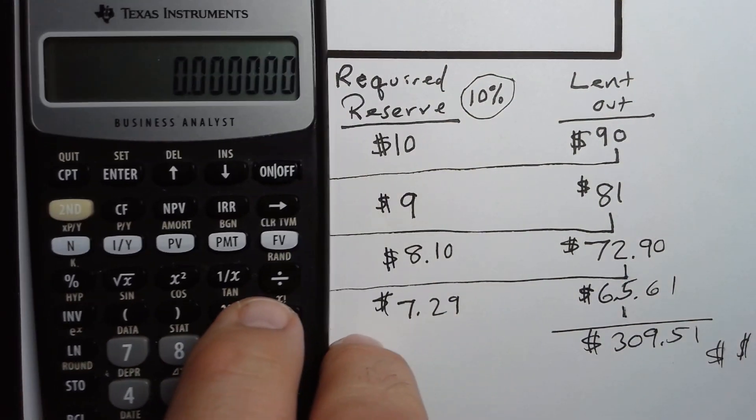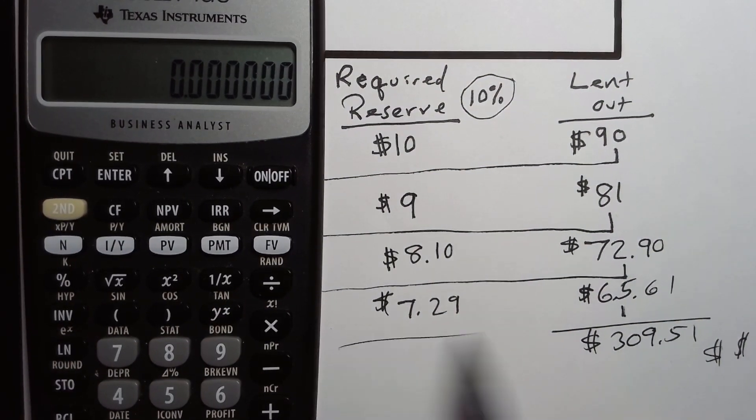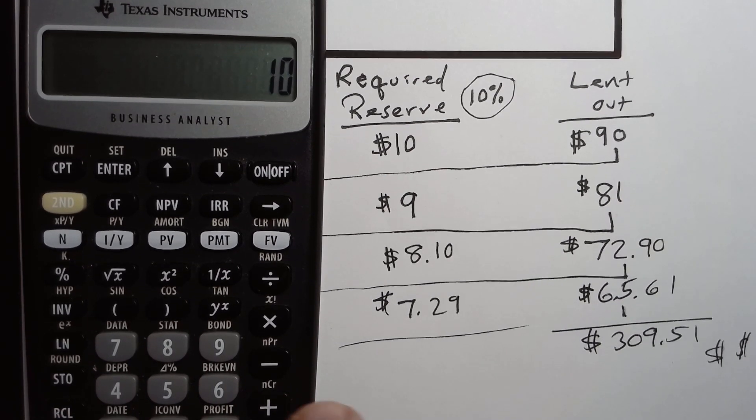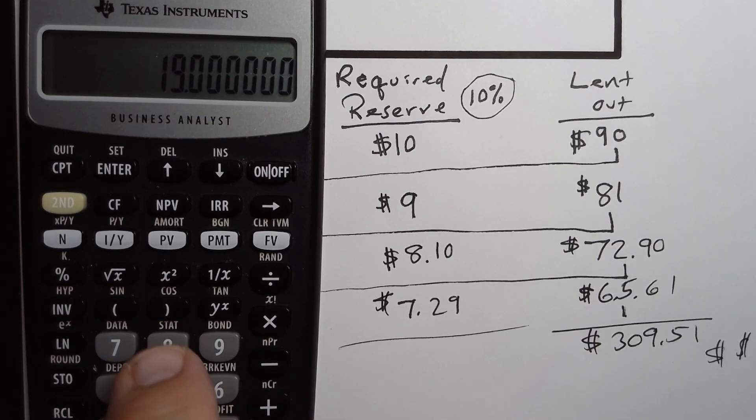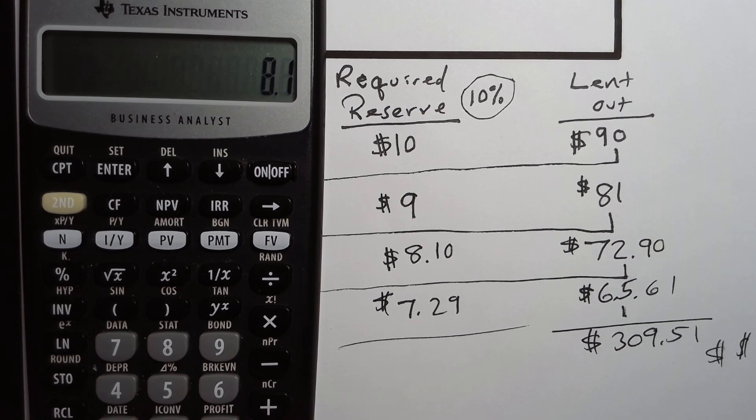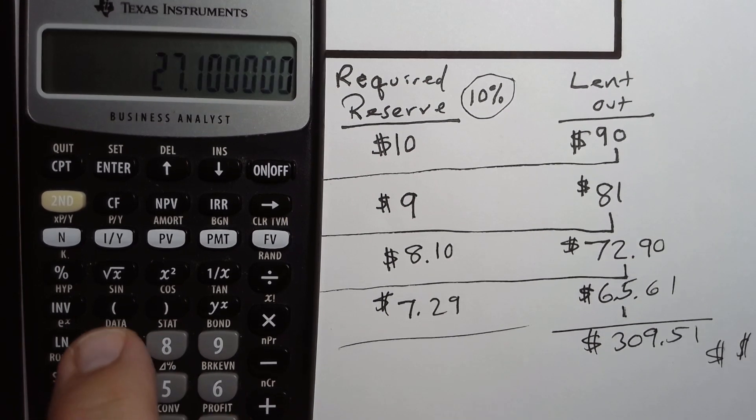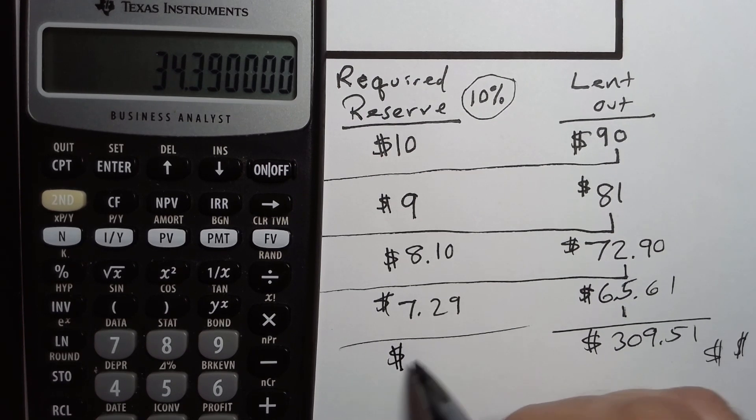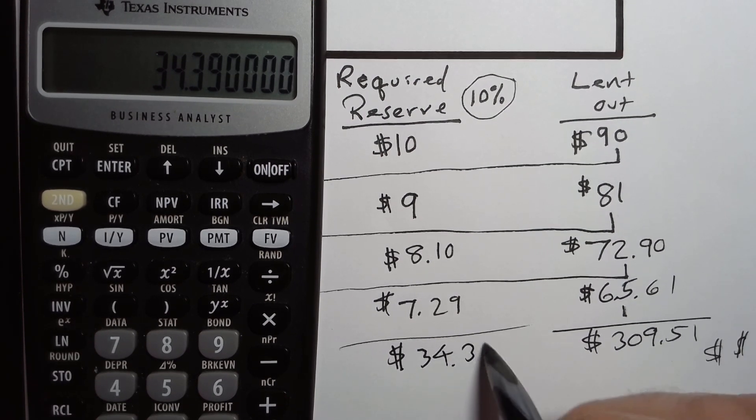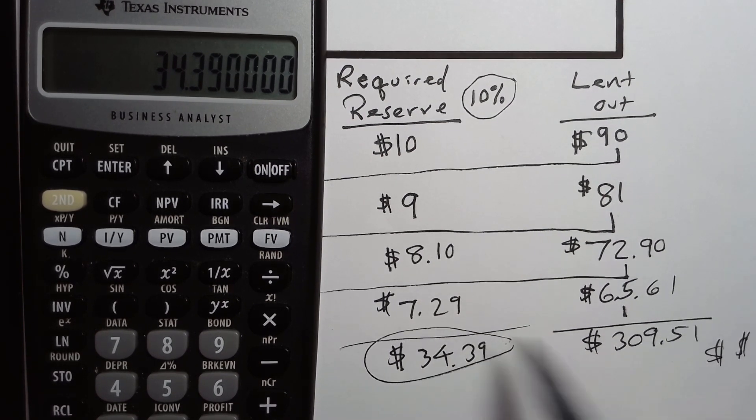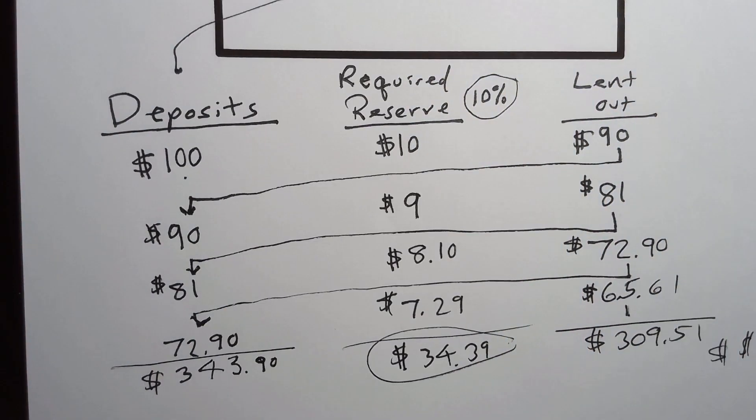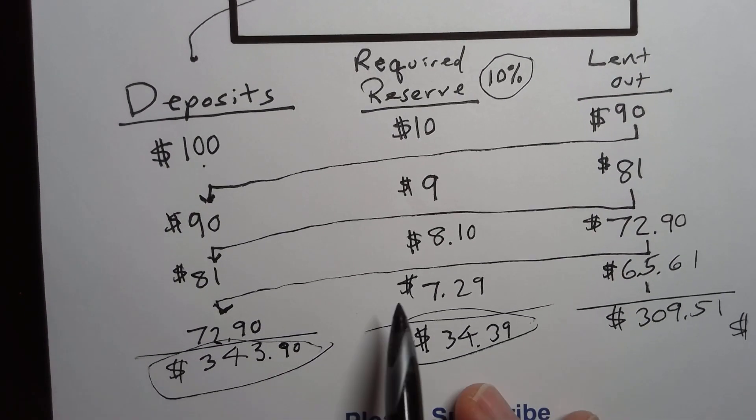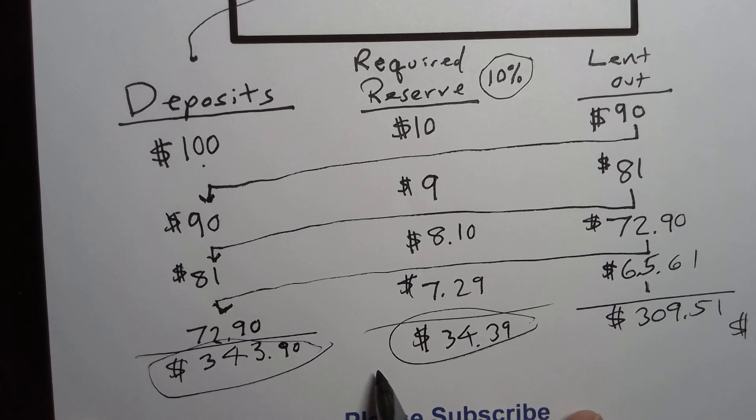However, let's look at how much the bank actually has on hand. We have $10 plus $9. You see how this is going, plus $8.10 and $7.29. And the bank only has $34.39 on hand to cover the $343.90 deposited.